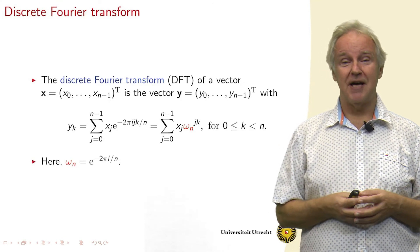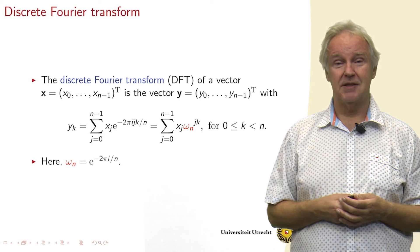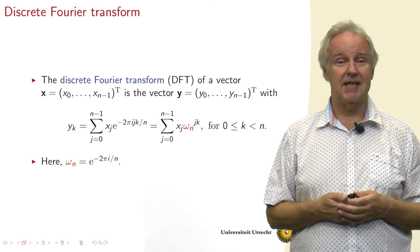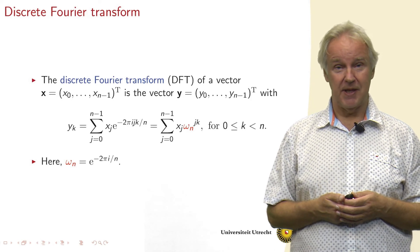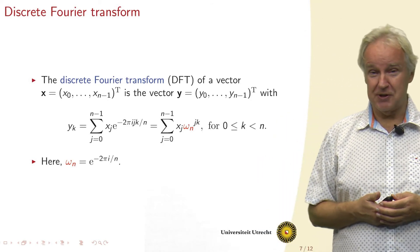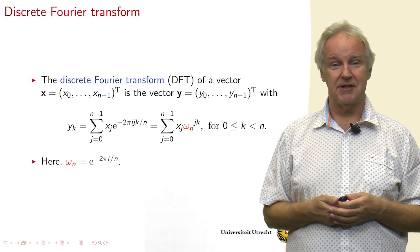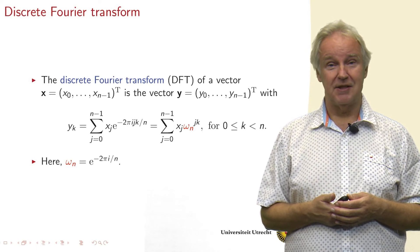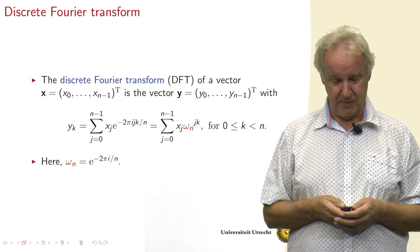So formally we define the discrete Fourier transform of a vector x of length n as the vector y, also of length n. And we define it as yk equals the sum from j equals 0 to n minus 1 of xj e to the power minus 2 pi ij k divided by n. And since we don't want to mention all the letters of the alphabet all the time, we introduce an abbreviation which is omega n is e to the power minus 2 pi i divided by n.